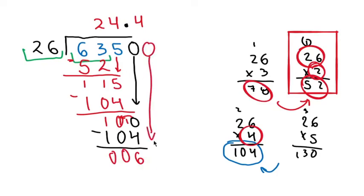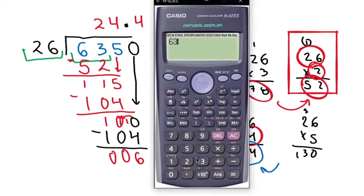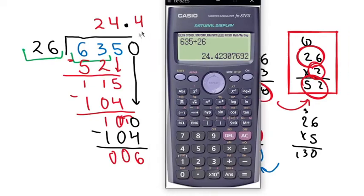I could keep adding zeros and bringing them down, but it doesn't make sense because your notebook will run out of space. This is already for higher grades. Let's verify in the calculator: we put 635 divided by 26 and we get 24.4... As I said, we can keep doing the division and it will give us more decimals, but it is not worth it — we will never finish. You can choose to leave it at a reasonable point and the result is very accurate. I hope this video has helped you learn how to divide with a two-digit divisor and a three-digit dividend. See you in the next video!